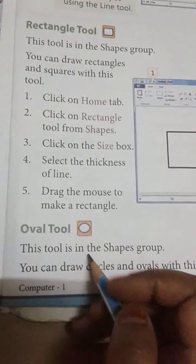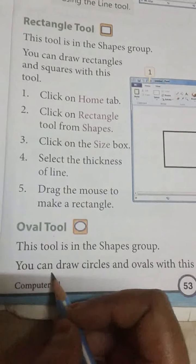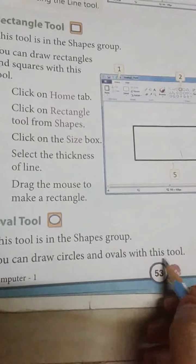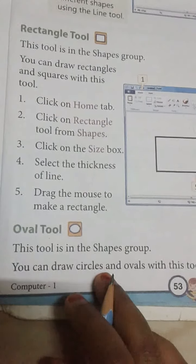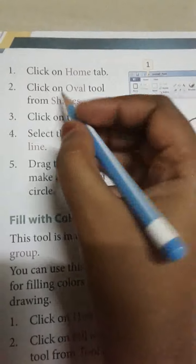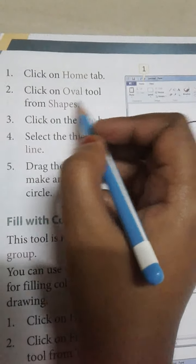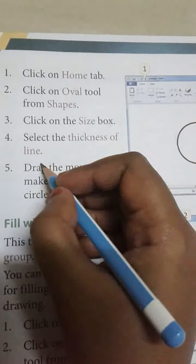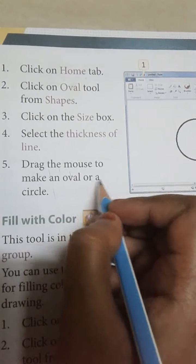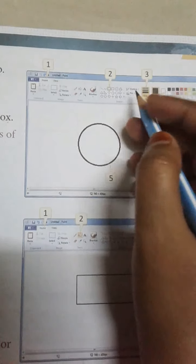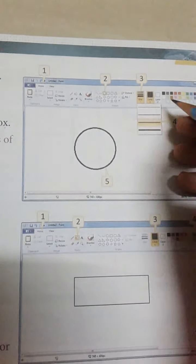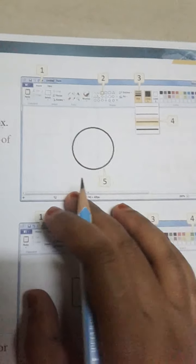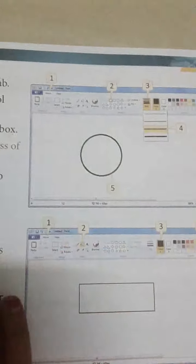The Oval tool is in the shape group. You can draw a circle and oval with this tool. Steps: Click on the Home tab, click on the oval tool from shapes, click on the size box, select the thickness of the line, drag the mouse to make the oval and circle. We will go to the Home tab, select the oval tool, drag the mouse, and make the oval and circle.